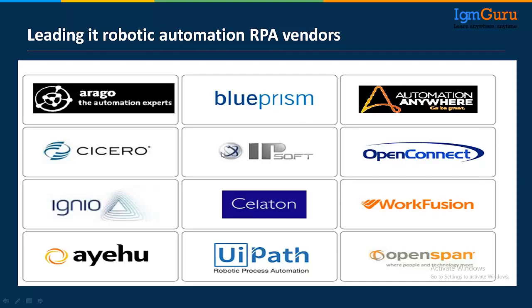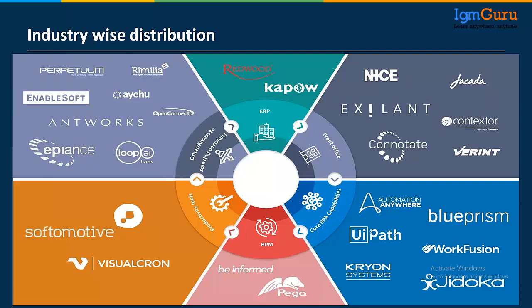There are differences between these three tools, but these are the market leaders. Blue Prism is known for its core RPA capability. We also have Pega, which was originally BPM-focused and has now converted to include RPA capability as well.